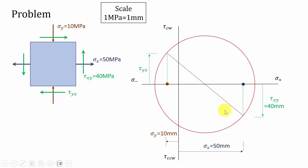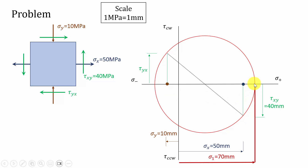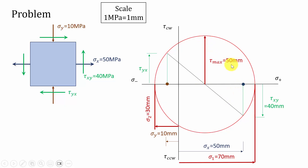Now we have constructed the Mohr circle. Next, we can evaluate the sigma values. The maximum distance of the Mohr circle from the origin on the right side is sigma 1, which I measure as 70 mm. Similarly, on the left side I can evaluate sigma 2 as 30 mm. The tau max value from the center — the maximum radius — is 50 mm. Before constructing the element, we should evaluate the principal plane inclination. The 2θp value is 53 degrees.